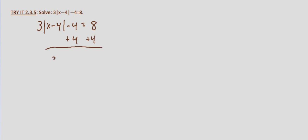We get 3 times the absolute value of x minus 4 equals 8 plus 4, which is 12. Divide both sides by 3. We get the absolute value of x minus 4 equals 4.